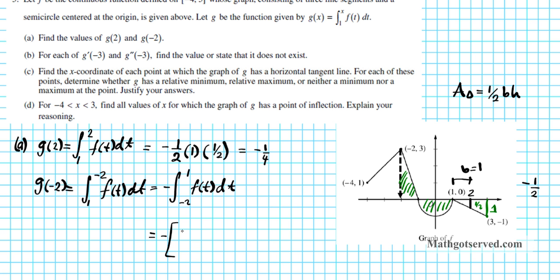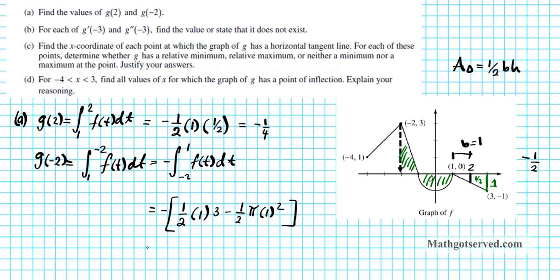This is going to be negative times: the area of the triangle, which is one-half base times height — base is 1 and height is 3 units — plus the area of the semi-circle, which is one-half times pi times radius squared. The radius is 1. Note that the semi-circle is underneath the x-axis, so it's going to be negative. Distributing the negative, we end up with negative 3 over 2 plus pi over 2. So that's the value of g(-2).